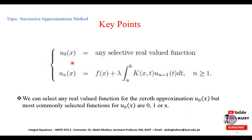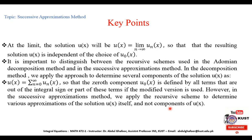Although u0(x) is arbitrary, for simplicity we take u0(x) equal to 0, 1, or x. At the limit, the solution u(x) equals the limit as n tends to infinity of un(x), so the resultant solution is independent of the choice of u0. Different choices of u0 will lead to the same final solution, meaning u(x) is independent of the choice of u0(x).